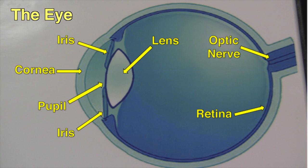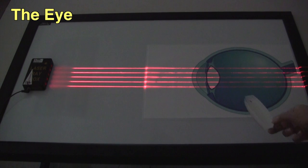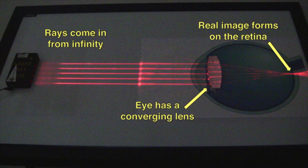One example of a converging lens is found in the eye. The cornea and lens of the eye, which are both converging, focus light to form real images on the retina.